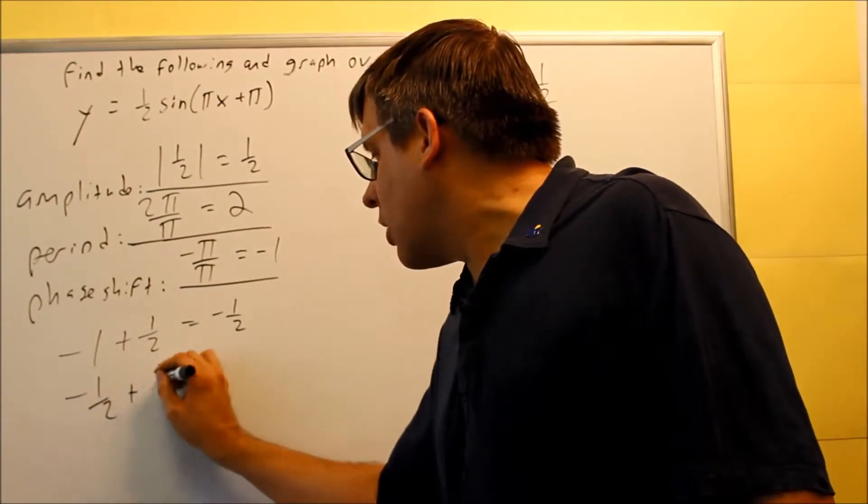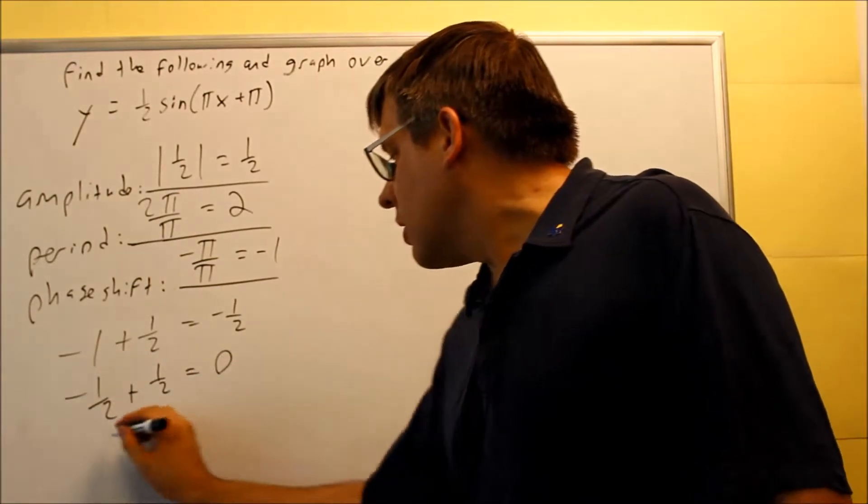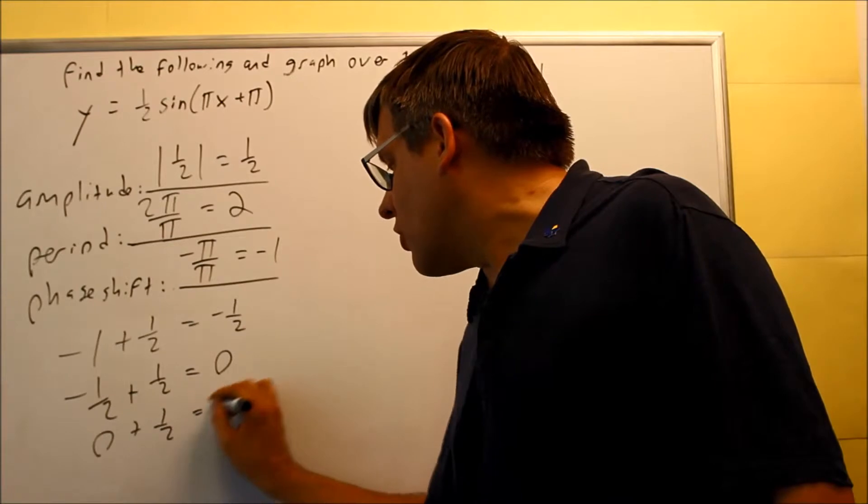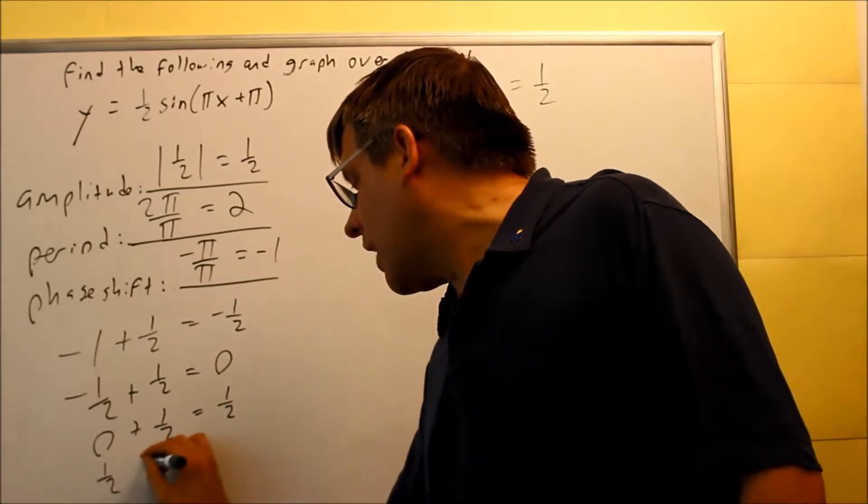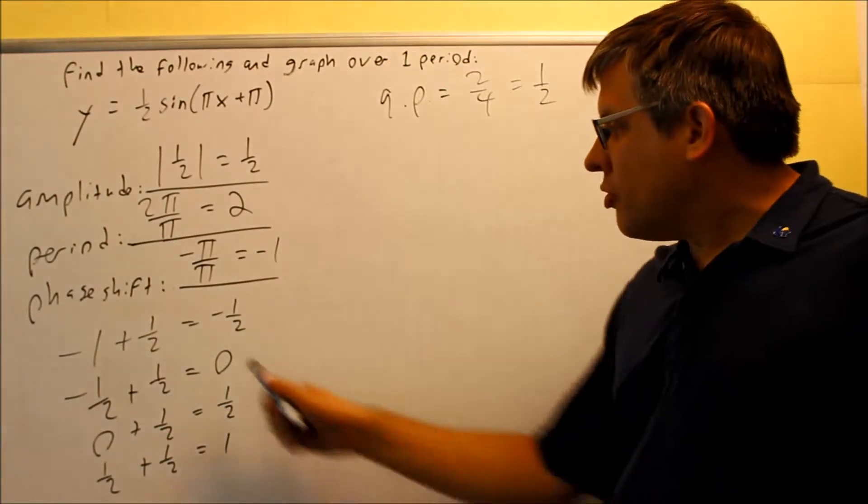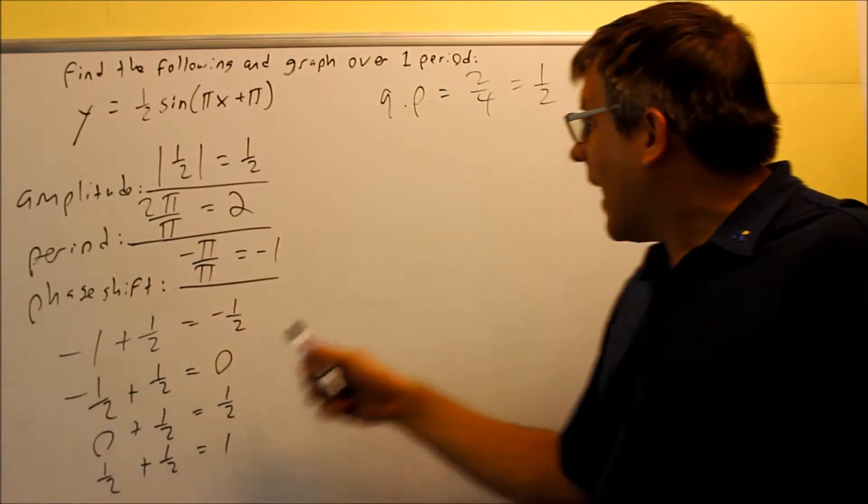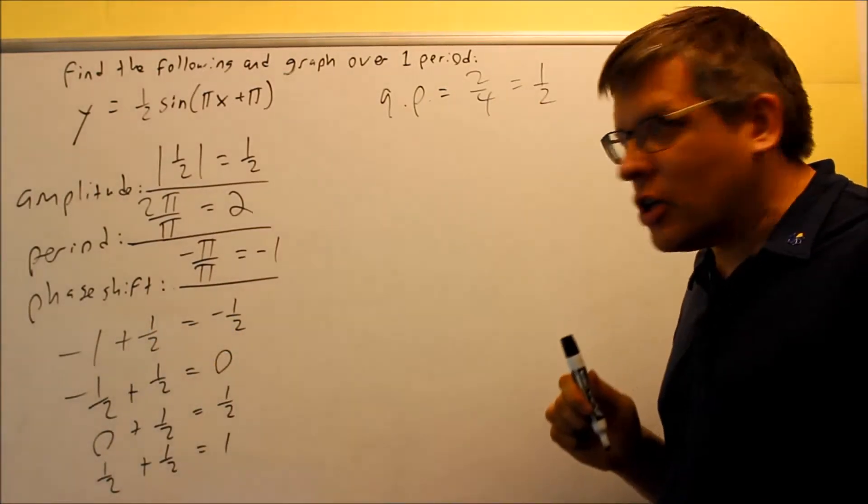And if I do negative 1/2 plus 1/2, I get 0. 0 plus 1/2 is 1/2, and then I have 1/2 plus 1/2 is 1. All I'm doing is I'm just adding 1/2 all the way across because that's my quarter point.